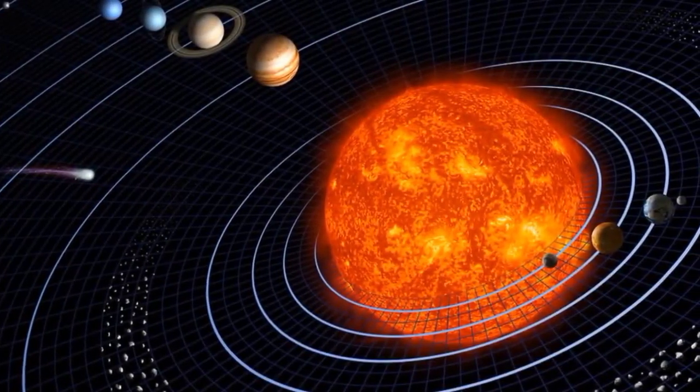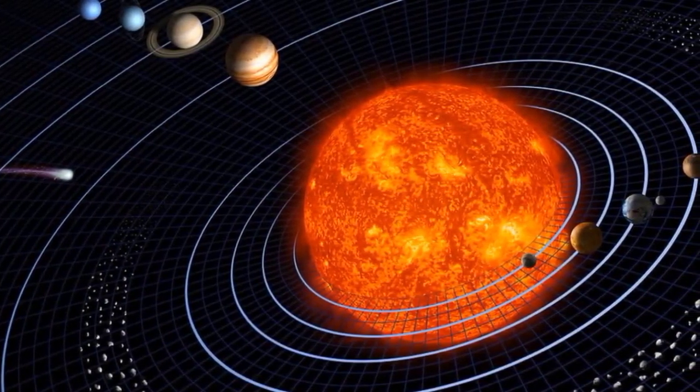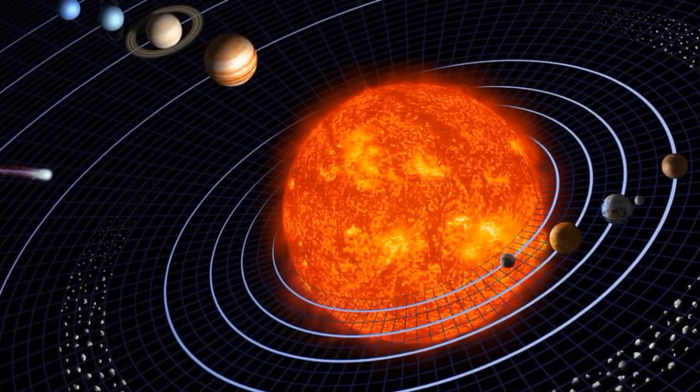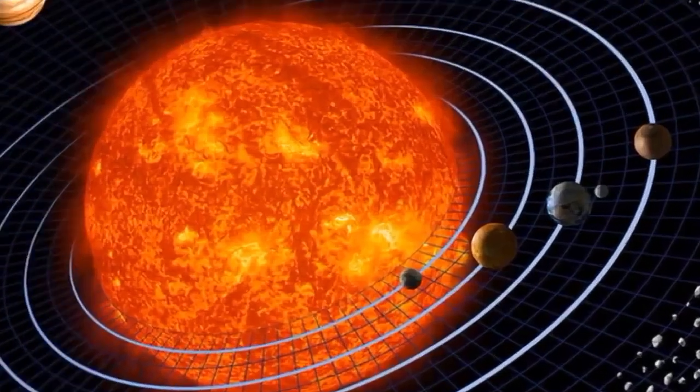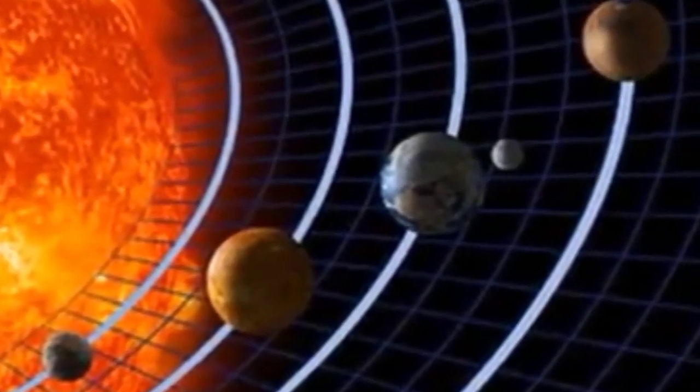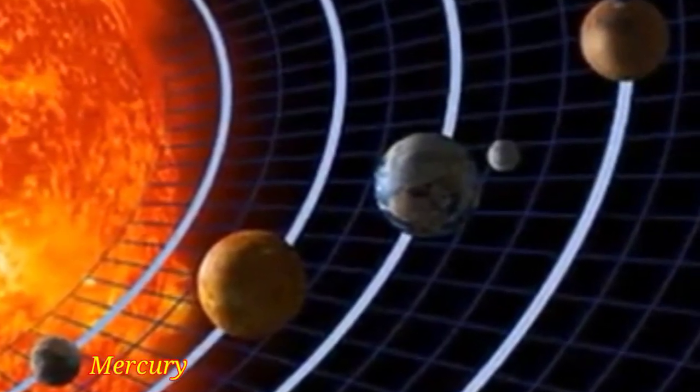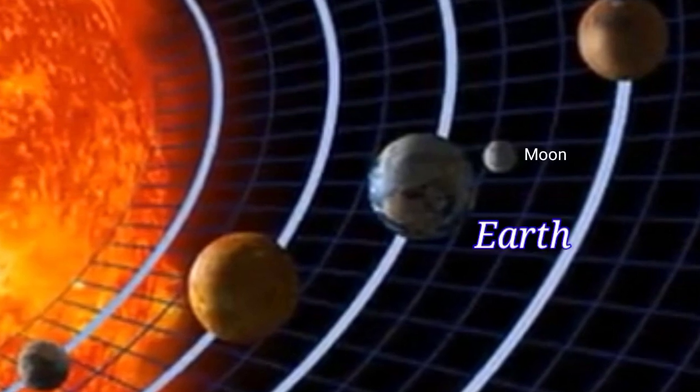All these heavenly bodies revolve around our sun's orbit with its gravitational force. The four planets closest to the sun are Mercury, Venus, Earth, and Mars.